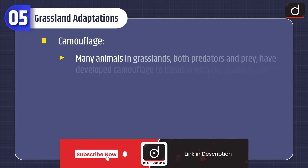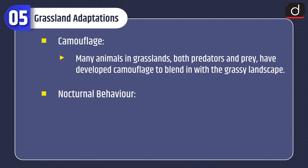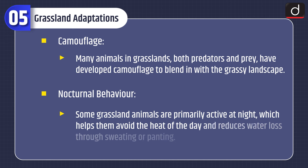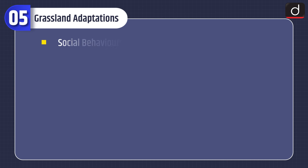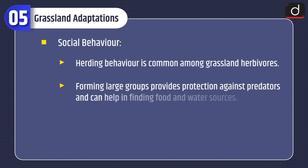Camouflage: many animals in grasslands, both predators and prey, have developed camouflage to blend in with the grassy landscape. Nocturnal behavior: some grassland animals are primarily active at night, which helps them avoid the heat of the day and reduces water loss through sweating or panting. Social behavior: herding behavior is common among grassland herbivores — forming large groups provides protection against predators and helps in finding food and water sources.